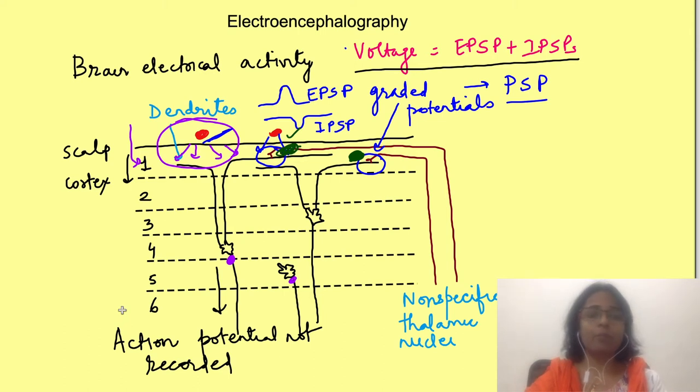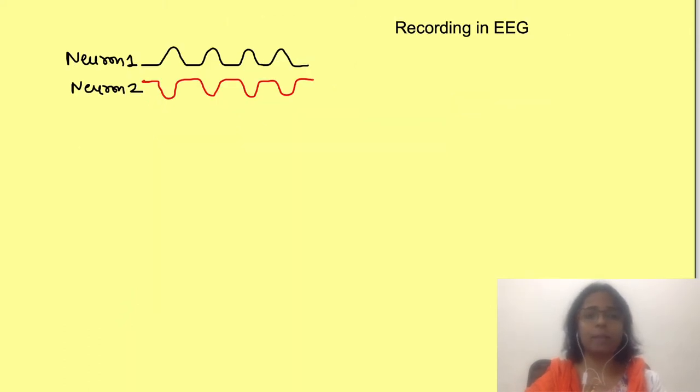Before we proceed, let's see some hypothetical examples of summing up of electrical activity. This will help you in understanding EEG waves. In this figure there is equal positive and negative excitation near the electrode. It will sum up and the recorded activity will be like this.